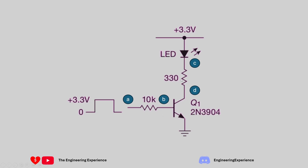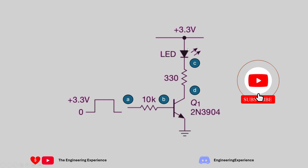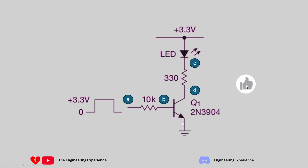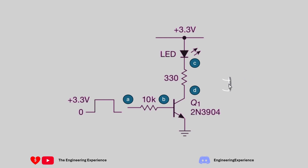We have another resistor of 330 ohms connected to the collector of the transistor - the collector is the pin without the arrow. That resistor connects to the 3.3 volt power supply via the LED. The emitter of the transistor is connected straight to ground, shown with the arrow.